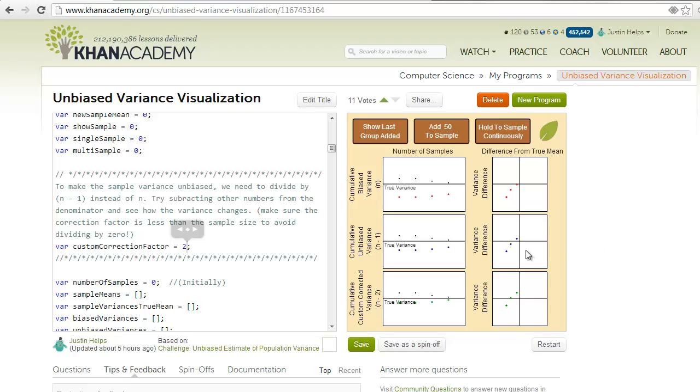In the graphs on the right side, each point represents one sample group. Here it looks like the first two are pretty much on top of each other. But anyway, the difference between the sample mean and the true mean is plotted on the horizontal axis, and the difference between the respective variances is plotted on the vertical axis.